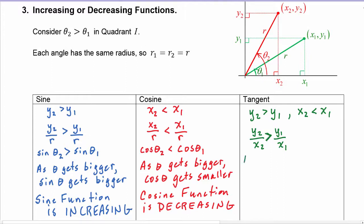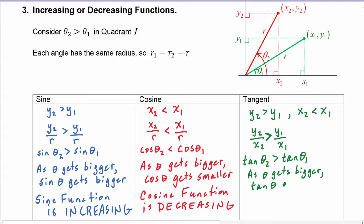We get that tangent of theta two is greater than tangent of theta one, so the bigger angle has the bigger tangent. As theta gets bigger, tangent of theta gets bigger, which tells us that the tangent function is increasing.